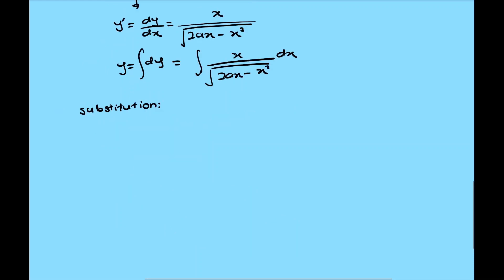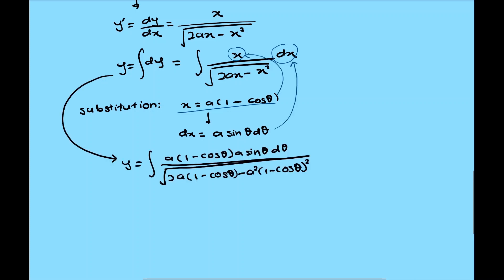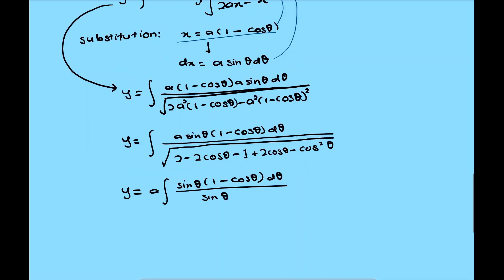We're going to use substitution technique where x is equal to a times 1 minus cos theta. Effectively, dx will become equal to a sin theta d theta. And the next step is to substitute for all x's and dx term, which will become much longer. But don't worry, this can be simplified further to become like this. Now, the sin theta term can be eliminated. What's left will be a times the integral of 1 minus cos theta d theta. After integration, we have y is equal to a theta minus sin theta plus constant c.